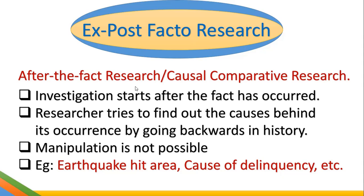The researcher tries to find cause and effect by comparing two or more groups, which is why this research is also called causal comparative research. Since the researcher goes back to history to trace records, this is a kind of retrospective research — very opposite to prospective research, where the researcher predicts the future. So prospective research is a kind of forecasting, while retrospective research involves going back to the past to find information by analyzing history and records.